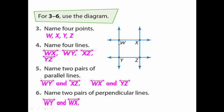We have another perpendicular pair: WX and XZ. WX is a horizontal line and XZ is a vertical line — they are perpendicular, intersecting at point X. You have four right angles at that corner.